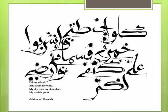Here's another example. This is a poem by Mahmoud Darwish, a modern poet. The artist has taken calligraphy — a very traditional form — but evoked it in a very modern style with loose brush strokes and ink splotches for the dots over the letters. The poem roughly translates to: 'Eat my wheat and drink my wine. My sky is on your shoulders, my earth is yours.' Keeping true to the respect for poetry and the traditional art of calligraphy, the artist has combined them in a very modern way.